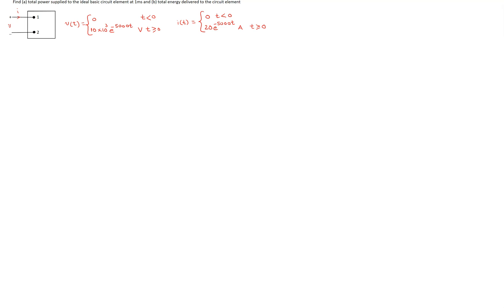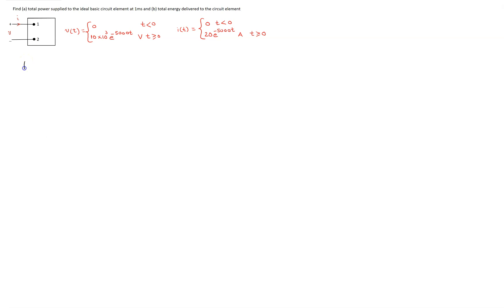The first task is to find the power. Power is given by the product of the voltage and the current. However, we need to determine whether this is plus or minus — whether we write it with a plus sign or a minus sign. In order to do that, we need to apply the passive sign convention, which says if the current is entering the terminal marked plus, then we write the power expression with a positive sign.